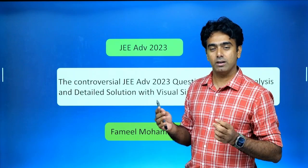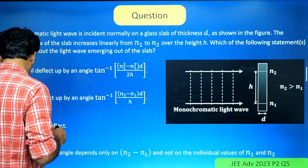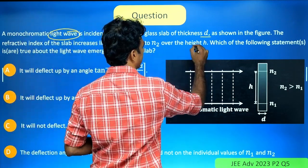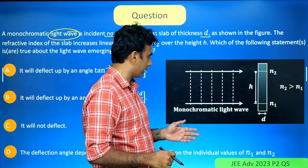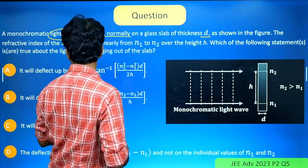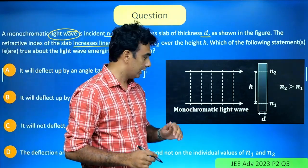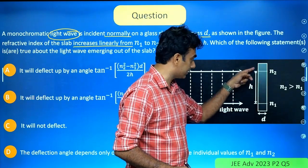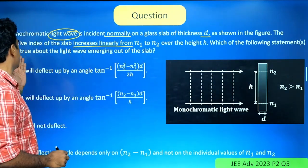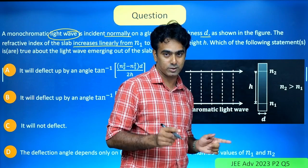Let's see the question first. A monochromatic light wave is incident normally on a glass slab of thickness d, as shown in the figure. This is the glass slab of thickness d and monochromatic light is coming from this side. The refractive index of the slab increases linearly from n1 to n2 over a height h — it varies continuously and linearly. Which of the following statements are true about the light emerging out of the slab?